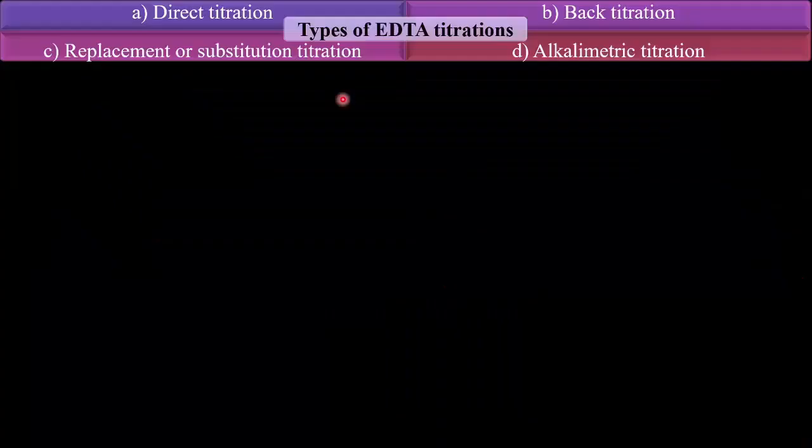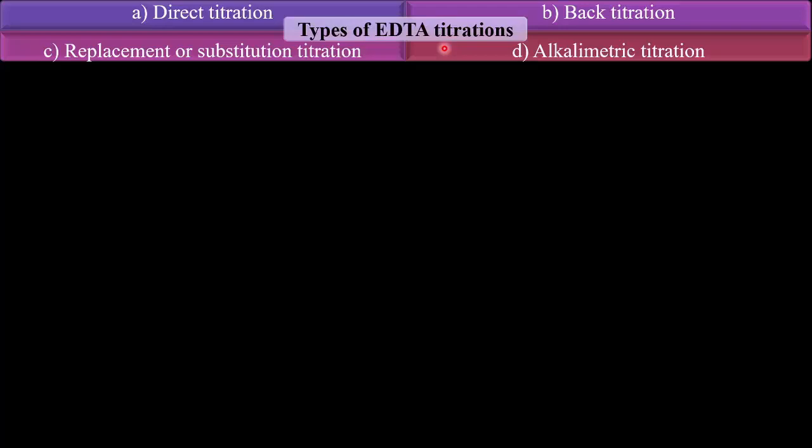Now we have seen the types of EDTA titrations. Based on the procedures used for the titrations, these EDTA titrations are divided into four types: first, direct titration; second, back titration; third, replacement or substitution titration; and fourth, alkalimetric titration. First we have seen the direct titration.